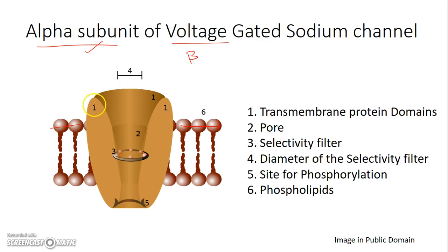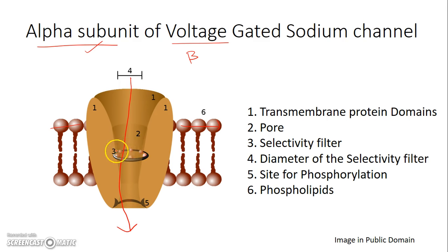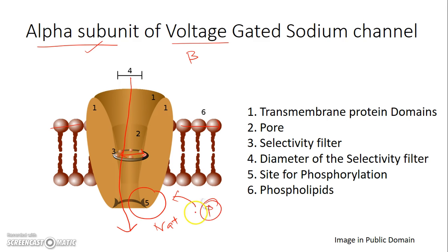This is the phospholipid bilayer and this is a transmembrane domain protein, shown in three dimensions and as a cross-section image. The pore through which the sodium ion passes from outside to inside is labeled, along with the selectivity filter which selects and allows only sodium ions. There are also sites for phosphorylation — by adding a phosphate group, the activity of the entire protein domain is modified. Let's stretch this three-dimensional image into a two-dimensional image of the transmembrane protein domains.